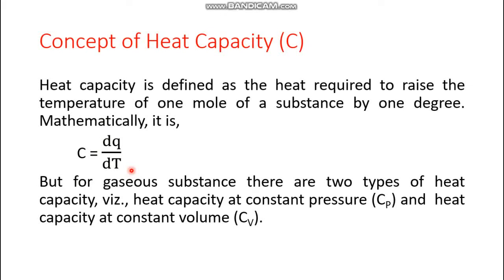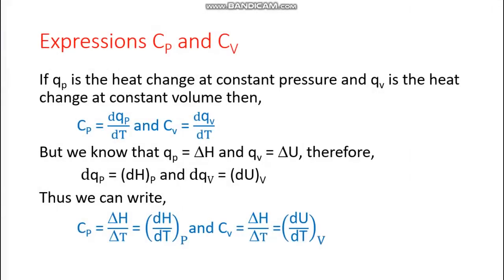For gaseous substances, when heat is absorbed the gas expands. Unlike solids and liquids, this expansion cannot be neglected because mechanical work must be done if pressure is kept constant, meaning more energy is absorbed. Therefore, for gaseous substances there are two types of heat capacities: heat capacity at constant pressure Cp and heat capacity at constant volume Cv.